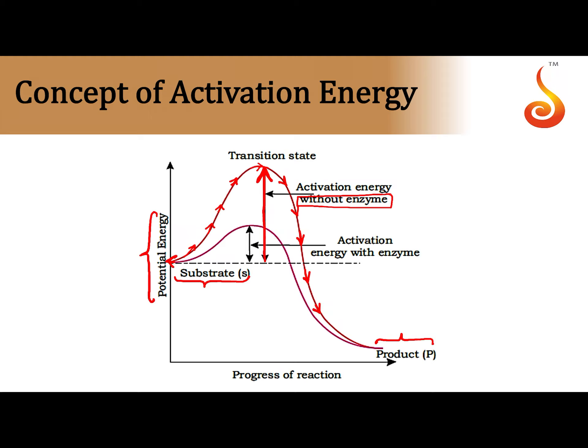You can consider activation energy as the extra push the substrate molecule requires to reach the higher energy state called the transition state. Now look at the shorter graph — with the enzyme present, notice that it reaches the peak of the graph, the transition state, very quickly. It did not demand as much activation energy. In the first case it demanded greater activation energy, but in the second graph it demands less, reaching the transition state much quicker.